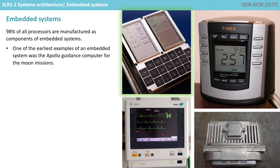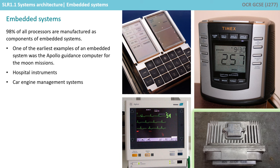Embedded systems range from portable devices such as digital watches and MP3 players, to large stationary installations like traffic lights, factory controllers, and largely complex systems like hybrid vehicles, MRI, and avionics. Here we've got examples of instruments used in hospitals, car engine management systems, and digital clocks.